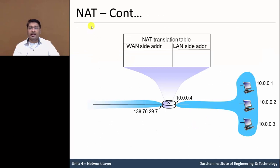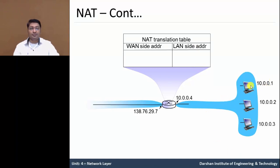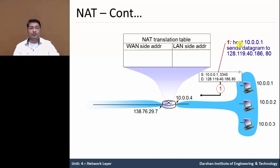In network address translation, the router has a NAT translation table. One column denotes the WAN side addressing — the internet/outside addressing — and the other column represents the LAN side, meaning our local home network addresses. In this network, 3 hosts are connected: 10.0.0.1, 2, and 3. If a datagram is sent from host 10.0.0.1, it sends the datagram to the destination IP address 128.119.40.186 on port 80.